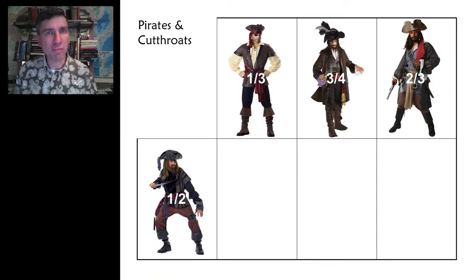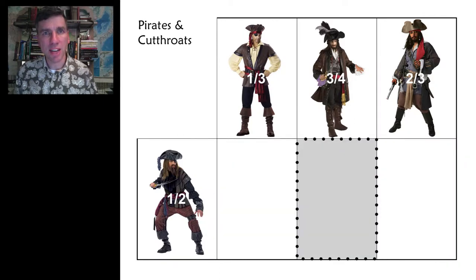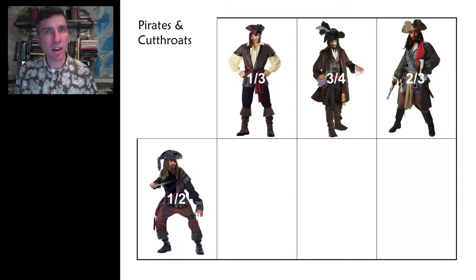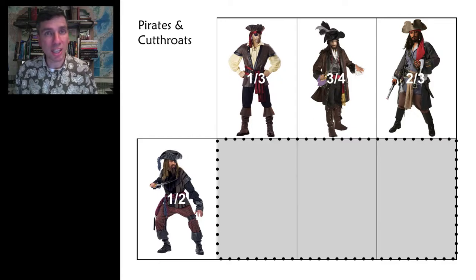A whole bunch of pirates and cutthroats have been captured and put in a three-room jail. In the first cell, one-third are pirates. In the second cell, three-quarters are pirates. In the last cell, two-thirds are pirates. Overall in the jail, one-half of the inmates are pirates. Your job is to find a possible number of pirates and cutthroats to put in each cell so that this is true.